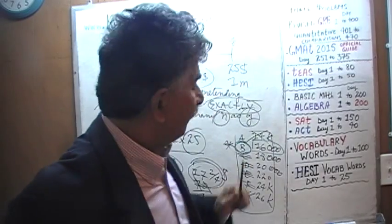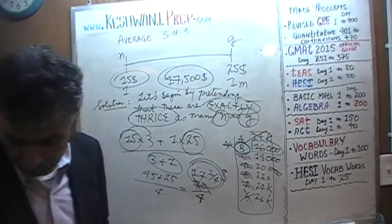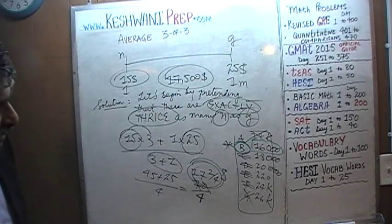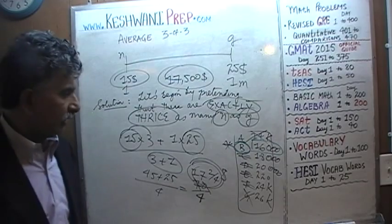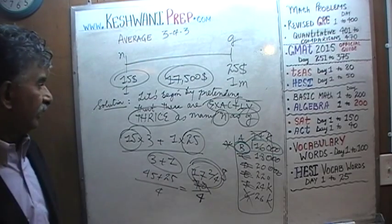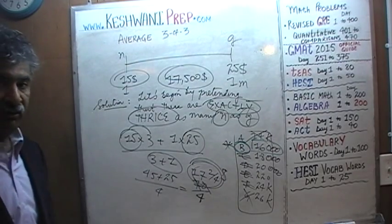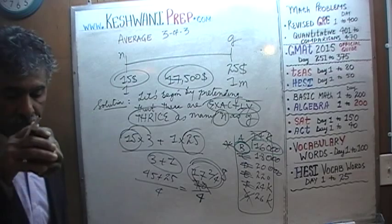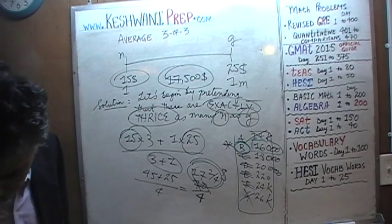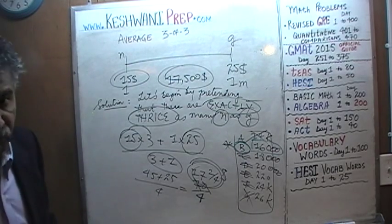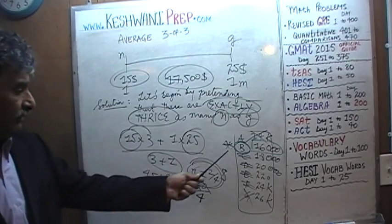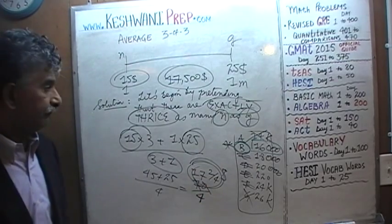So that was the end of Problem 13. The question asked what could be the average, and it turns out that out of all the answer choices, there is only one possibility — even though the question said to pick one or more. Recall that in question number 11 we did in fact have more than one correct answer choice.